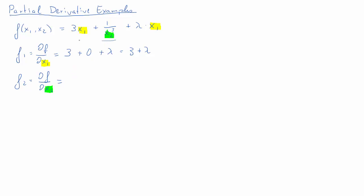Now x2 is our variable and everything else is a constant. The first term 3x1 doesn't include x2, so it will just contribute a zero. Then we have x2 to the power of negative 3, so we get negative 3 times x2 to the negative 4 as the derivative. That third term again doesn't have x2 and therefore only contributes a zero. The partial derivative f2 is negative 3x2 to the negative 4.